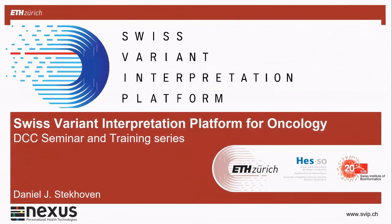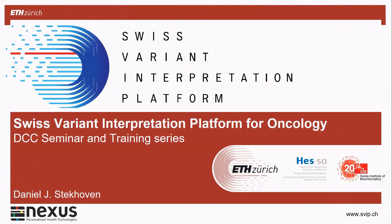The Swiss Variant Interpretation Platform for Oncology - rather than a formal list of what went well and what didn't, those things will come up naturally during the talk. One recommendation for projects is to start building a brand early on. We hired a small company to produce a logo, and the name came from the proposal. You should also have a website and a social media channel, but you actually have to use them - we're not really feeding our Twitter channel, which is why you'll see my personal handle rather than the SWIP one.